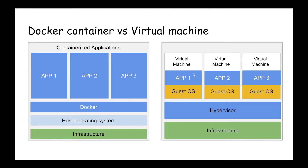For example, a hypervisor can be VirtualBox or VMware. On the hypervisor we run different virtual machines with their guest OS and then the applications running on those virtual machines. In this way we can have multiple virtual machines on the same host machine.